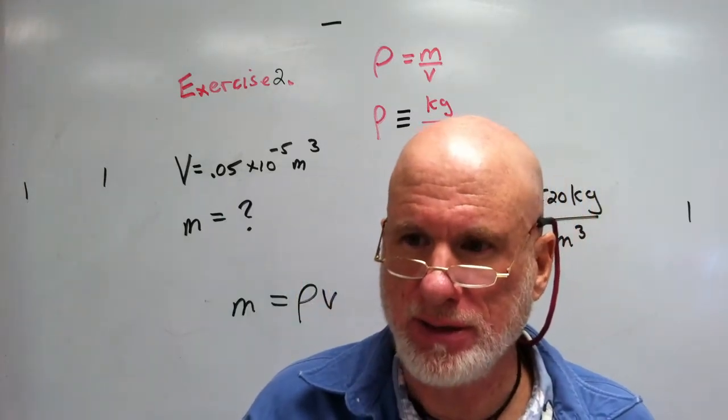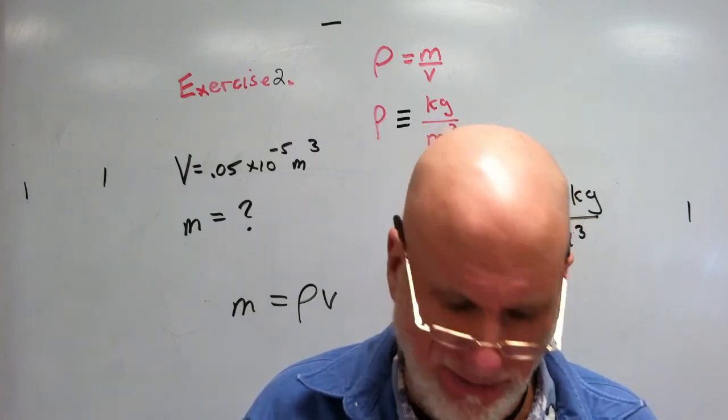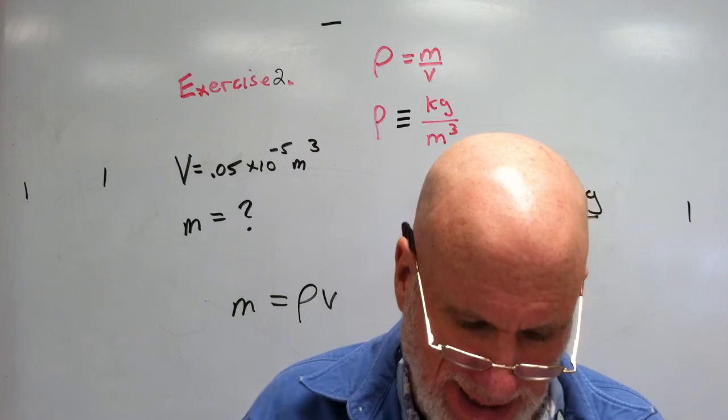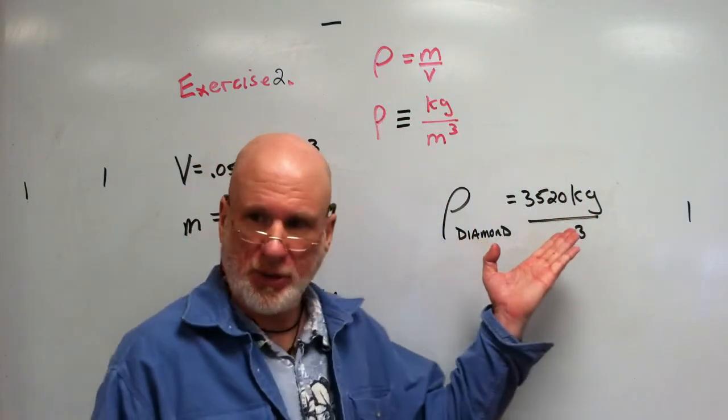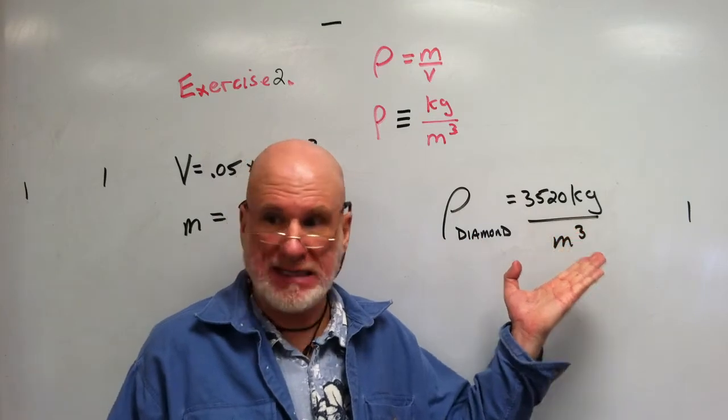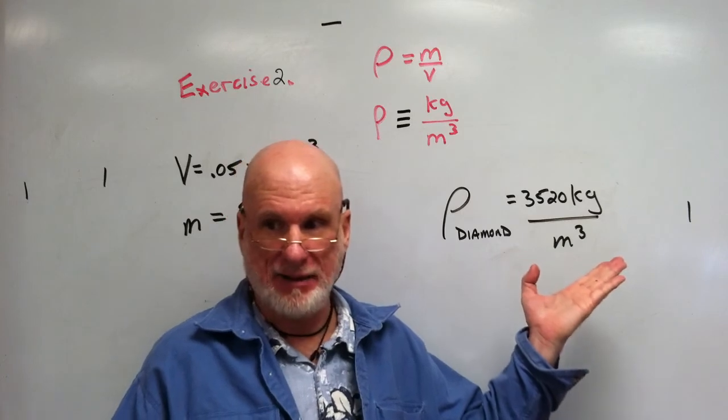Diamond, the precious stone, has a density of 3,520 kilograms per cubic meter. So it's about 3.5 times denser than water. That's it. It's really not that dense, if you think about it.